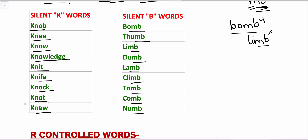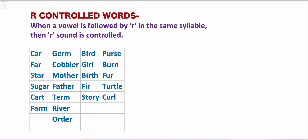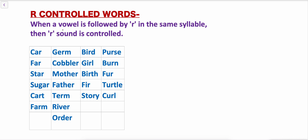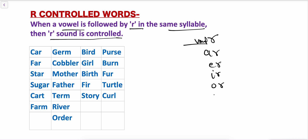Now let's see R-controlled words. When a vowel is followed by R in the same syllable, the R sound is controlled — it is not silent but it is minimized. So when in a word a vowel comes before R, such as A-R, E-R, I-R, O-R, or U-R, then the R sound will be controlled.